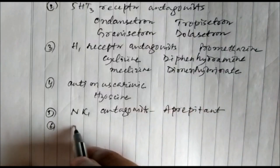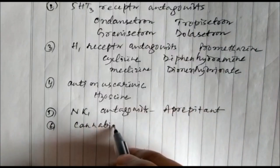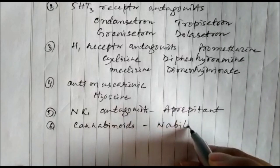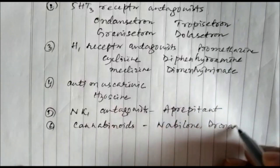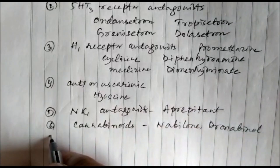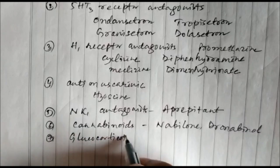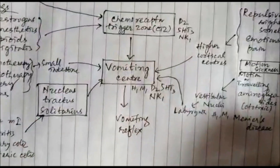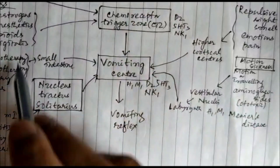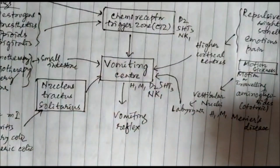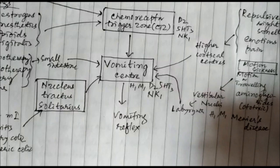In addition, we can have cannabinoids such as nabilone and dronabinol. We can also add glucocorticoids with other drugs to enhance their action. So all these drugs can be used as anti-emetics. If we understand the physiology of vomiting, we can easily understand the mechanism of all these drugs. Thank you.